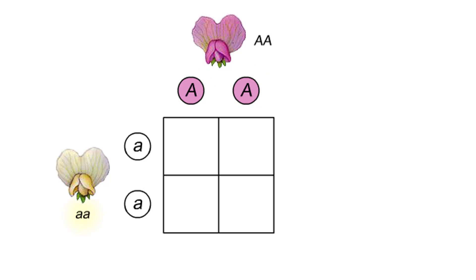The white flowered plant has two recessive alleles at the locus that governs flower color. It will produce only gametes that carry these alleles.